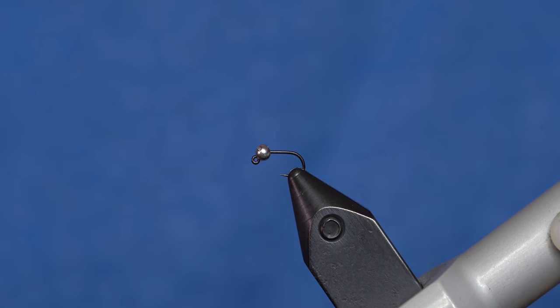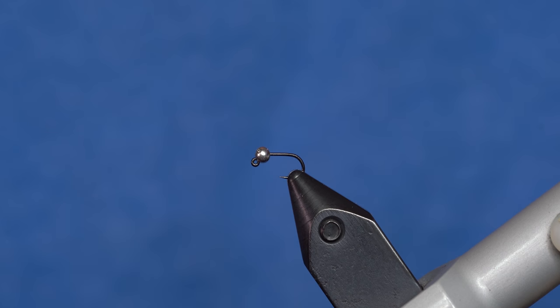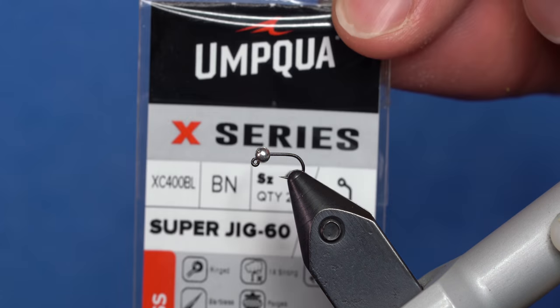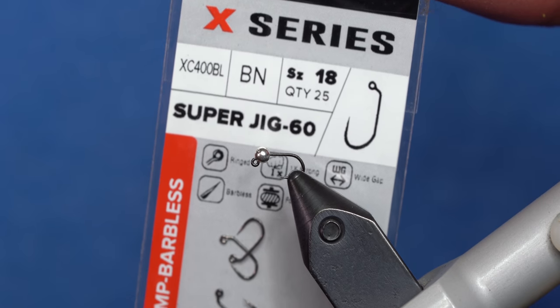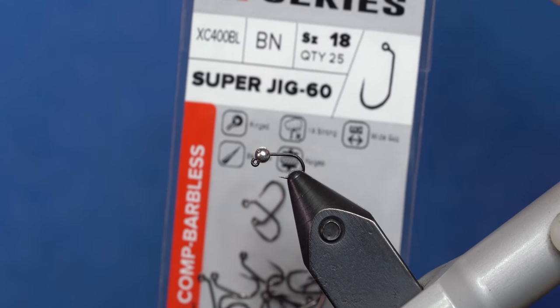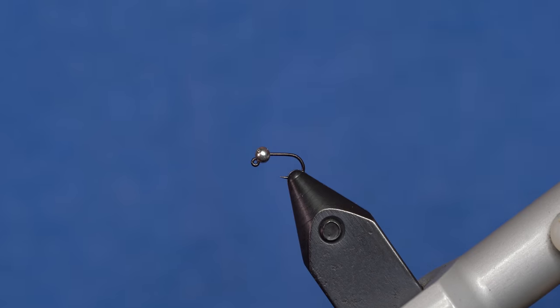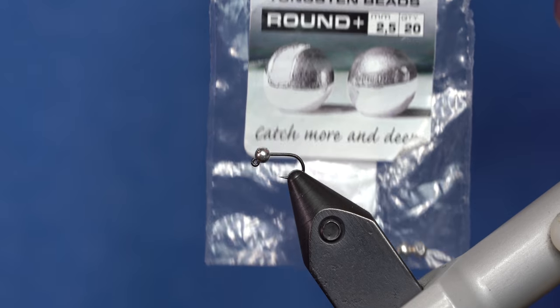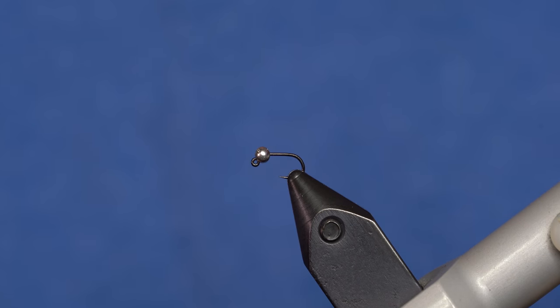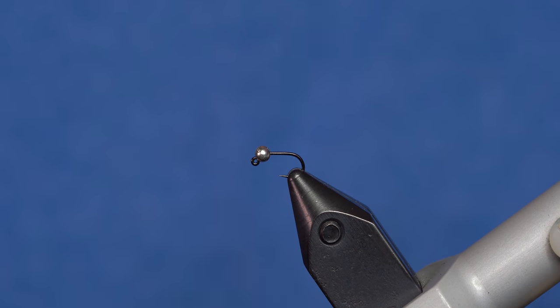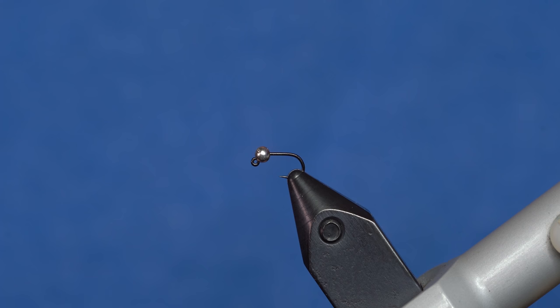Alright, this is going to be the Rainbow Warrior Pertigone. I've started with a size 18 Umpqua 400 X series hook in the vise, basically just a size 18 jig hook, nice and small. I've got a bead on there already. This is a Hanek 2.5mm slotted silver bead. You could tie this same size hook with a 2mm, 2.3mm, 2.4mm, 2.5mm, 2.8mm, 3.0mm, whatever you want, depending on how heavy or light you want this fly to be.